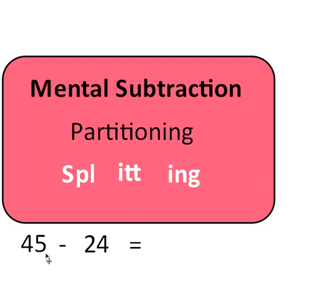In this example, 45 take away 24, the second number that I'm taking away is 24, and I'm going to split that into its units and tens. So here, instead of taking away 24, I'm now going to take away 4 and then take away 20.